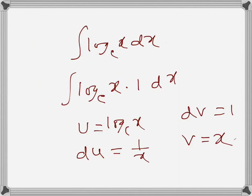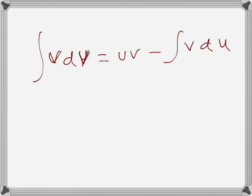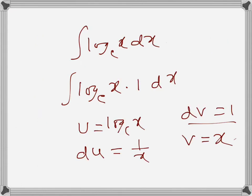The formula for integration by parts is integral of u dv equals uv minus integral of v du. We have designated dv as 1 dx, so this is the integral of log_e x dx.